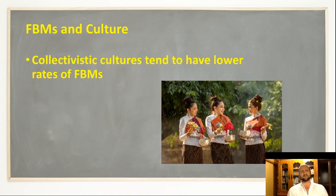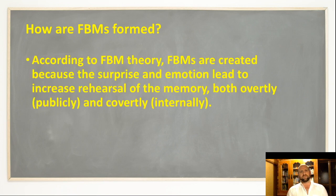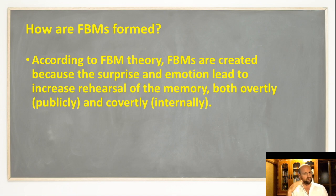The connection we're looking at is that collectivist cultures tend to have lower rates of flashbulb memories. According to the theory, because of the surprise and emotion of the event, it increases the rehearsal of the memory — covert and overt rehearsal. If something is really emotional and surprising, you're going to talk about it a lot with friends and family, and also go over it again in your mind. It's that rehearsal — talking about it and repeating it in your mind — which is going to increase the memory.